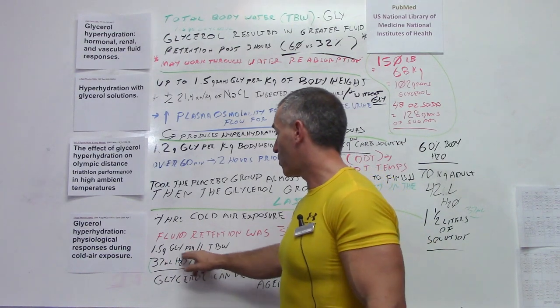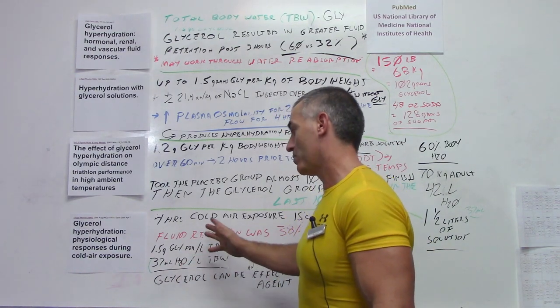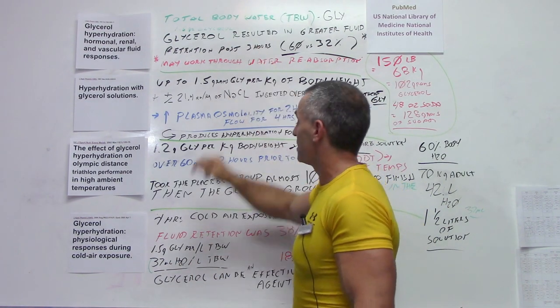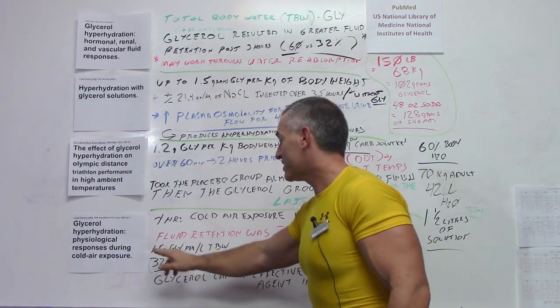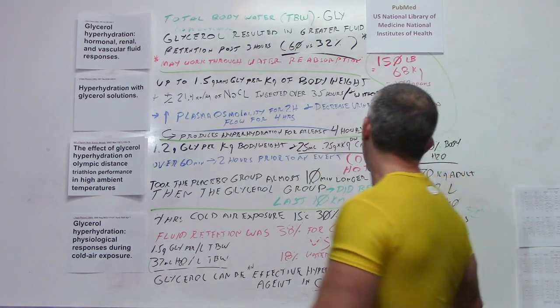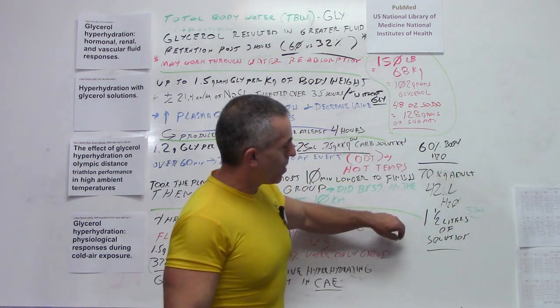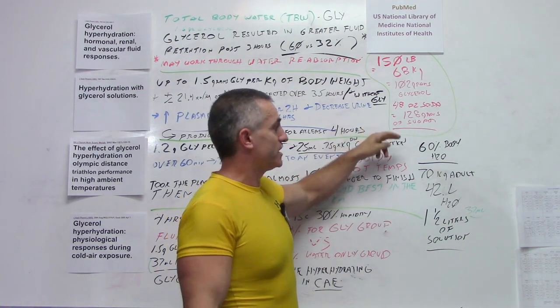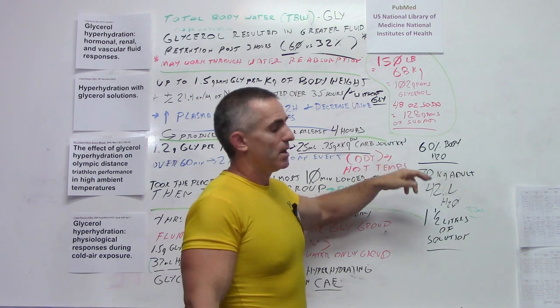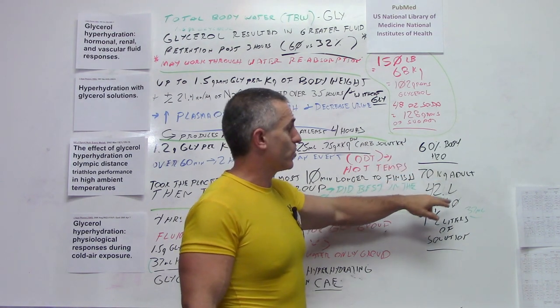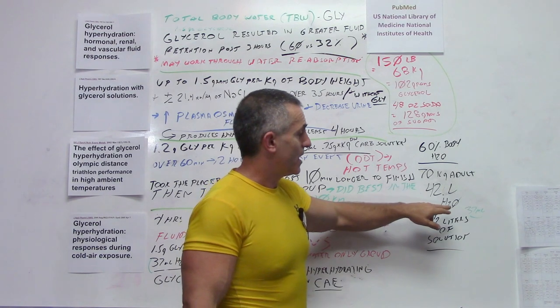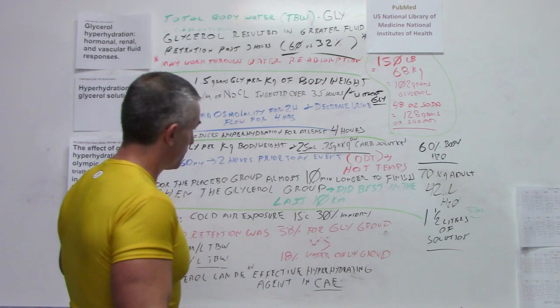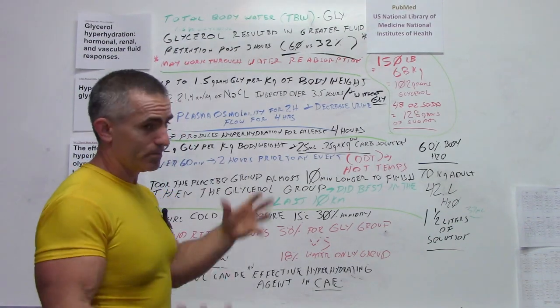The glycerol group retained their fluids, 38 percent of the fluids after four hours that they ingested. The water-only group only retained 18 percent, leading the researchers to come to the conclusion that glycerol can be an effective hyperhydrating agent in cold air exposure. They used 37 milliliters of water per liter of total body water volume. So that 37 milliliters that you see come up came up here again. It comes out to about one and a half liters of solution. The average individual, probably anywhere from 60 to 65 percent body water, 70 kilogram adult, it's going to end up at about 42 liters of water volume.